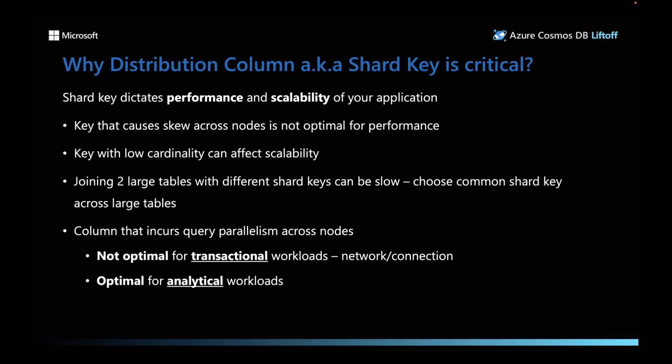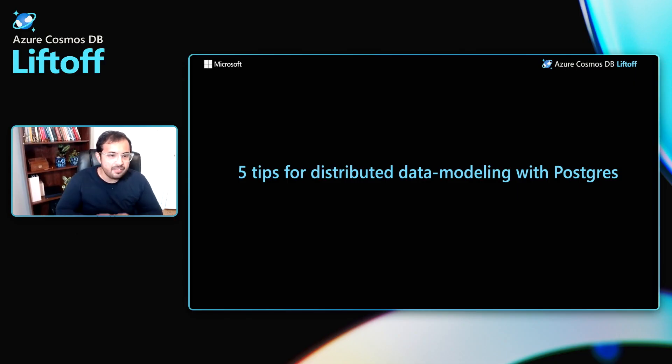A column that incurs query parallelism is not always great. For transactional workloads, query fanout is costly and can cause network latency — you want to pick a column that routes queries to a single node. Whereas in analytical workloads, you want queries parallelized across multiple nodes. In summary, the distribution column is a very important concept in Azure Cosmos DB for Postgres. Let's now learn five tips for distributed data modeling with Postgres.